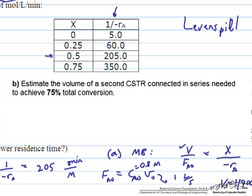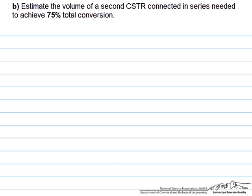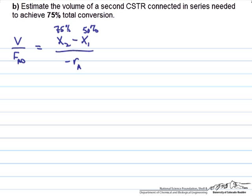In part B we want to estimate the volume of a second CSTR connected in series to the one we just solved for in order to get to 75% conversion. This is a very similar type setup. We can write the same expression. The only difference is now we look at a difference in the total conversions divided by the reaction rate. The equation we wrote first assumes implicitly that we start at 0% conversion. Here we're going from 50% to 75% if we have two reactors connected in series, and we already have 50% conversion entering the second reactor.